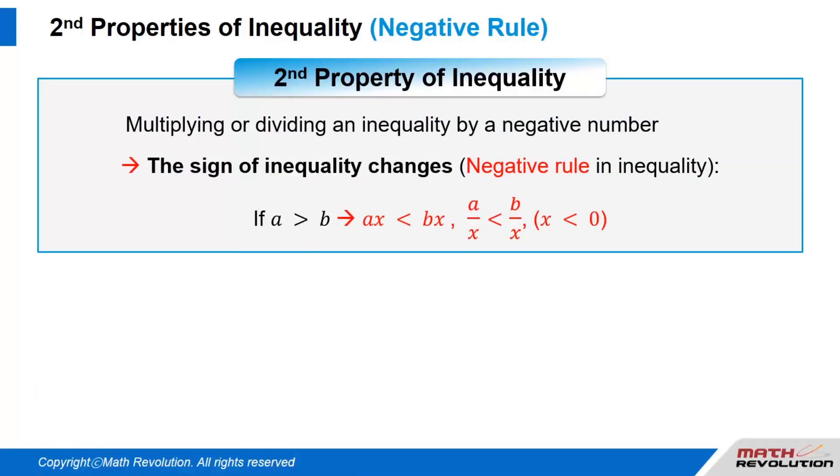Multiplying or dividing an inequality by a negative number changes the direction of the inequality sign, which is negative rule in inequality.